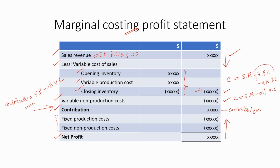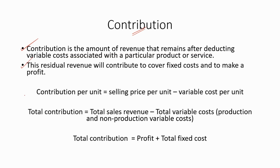The second method is a reverse calculation, where contribution is equal to profit plus total fixed costs. Using the net profit and the fixed costs — both production and non-production fixed costs — we can calculate the contribution. So simply, we can calculate the contribution per unit, which is equal to selling price per unit minus the variable cost per unit.